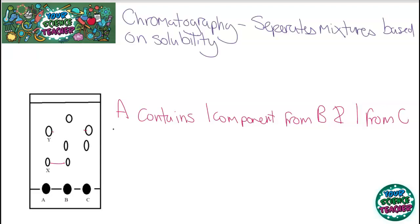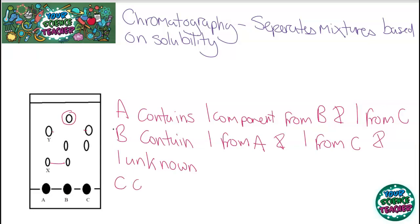If I was to look at B, that will contain one from A and one from C. And it also contains one unknown. And you can tell that because that spot doesn't line up with any of the other ones. And C contains one component A and one from B.